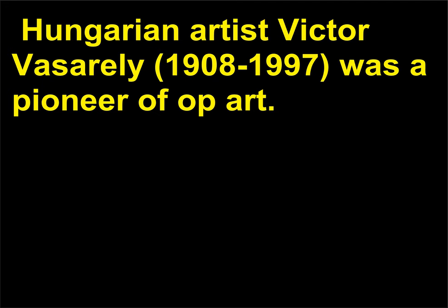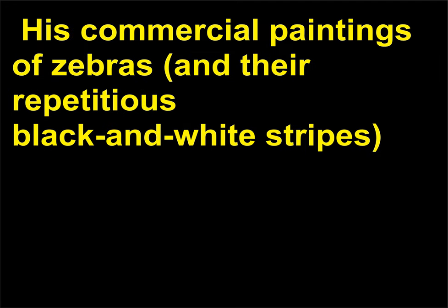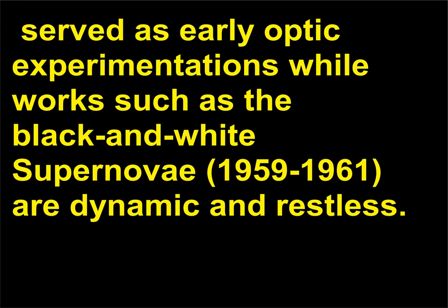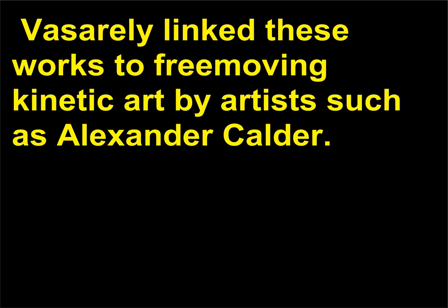Hungarian artist Victor Vasarely (1908–1997) was a pioneer of Op art. His commercial paintings of zebras and their repetitious black and white stripes served as early optic experimentations, while works such as the black and white Supernovae (1959–1961) are dynamic and restless. Vasarely linked these works to free-moving kinetic art by artists such as Alexander Calder.